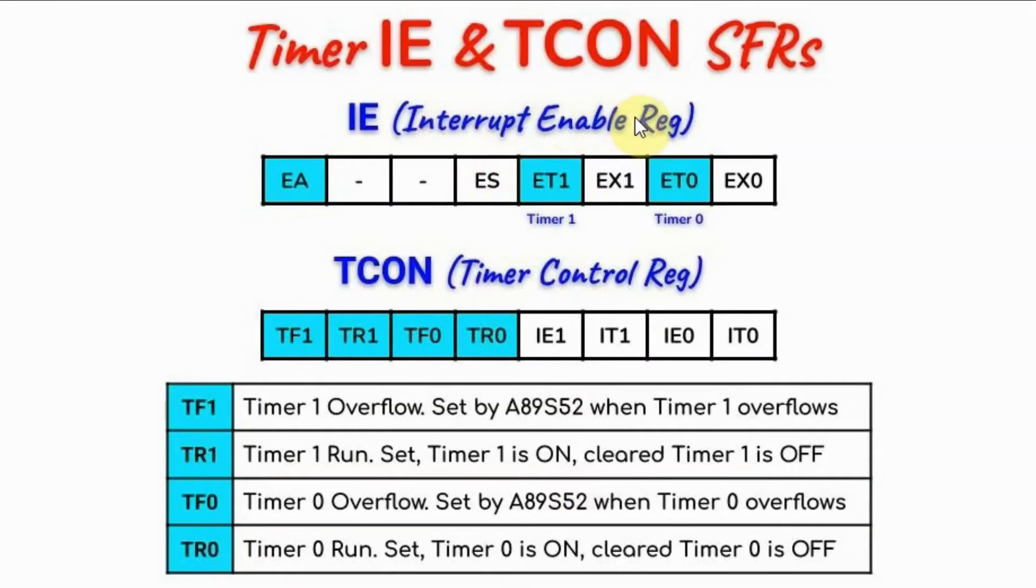The interrupt enable register is used to enable the timers. This bit will enable timer 0, this bit will enable timer 1, and this will enable timer all.